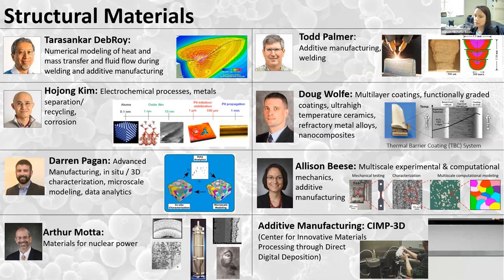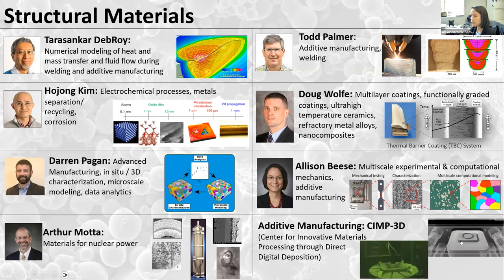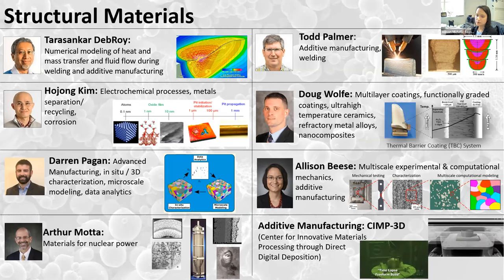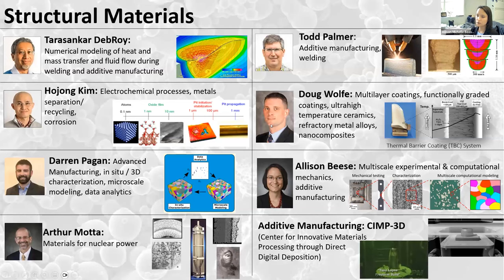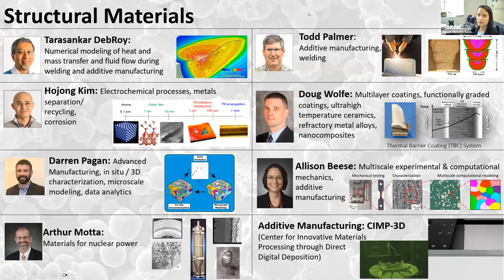In my group, we do work in multi-scale experiments and computational mechanics, looking at how microstructures impact mechanical behavior, with a lot of work in additive manufacturing. I also want to highlight our additive manufacturing center at Penn State, CIMP-3D, where we fabricate metal components using powder bed processes and directed energy deposition, as well as ceramics and polymers, and characterize how unique processing impacts structure and properties. Many of us are available in the structural materials breakout room today.